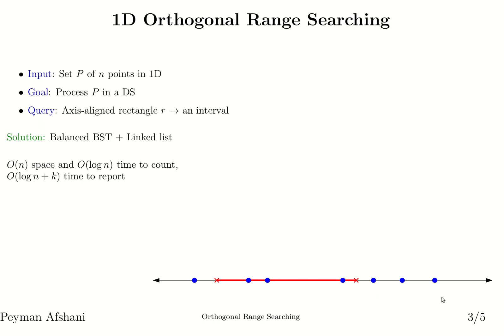Both of these data structures use linear space. To count the number of points we just need to find the endpoints — we want to count how many points are to the left of one endpoint, count how many points are to the left of the other, and then subtract them. In a balanced binary search tree we can easily store the number of points to the left of every input element. To report them, we find the endpoint and then using the linked list we can traverse the points between the two endpoints in log n plus k time, where log n is the time to locate the endpoint of the interval and k is the size of the output, paying constant time per output element.